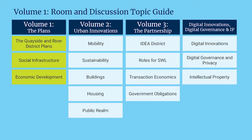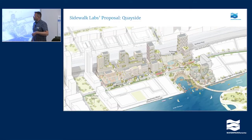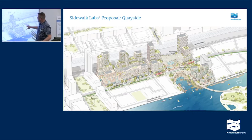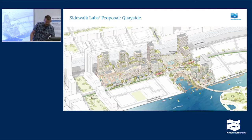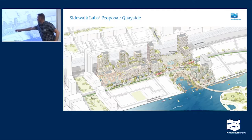I think everyone knows where we are. We're going to be talking about Quayside and the River District, social infrastructure and economic development today. So I want to orient you to the plan itself. This is Quayside. For those of you who don't know where Quayside is, this is Lake Ontario. This is what's called the Parliament Slip. This is showing the proposal for the Quayside plan — this is Parliament Street and Queens Quay East. The plan itself is broken up into five different development blocks, with Bonnie Castle Street, Parliament Street, and a new street just east of Parliament Street.